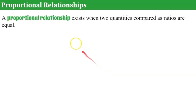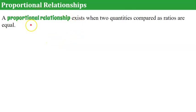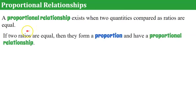Now we can talk about a proportional relationship. A proportional relationship exists when two quantities compared as ratios are equal. So if two ratios are equal to each other, they form a proportion, and we can say that they're in a proportional relationship. This becomes very important as we move through algebra.